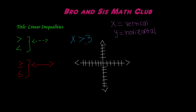So here, let's go ahead and graph this linear inequality, which is x is greater than 3. Remember this also: if you have x, then your line is going to be vertical, and if you have y, it's going to be horizontal. So in this case, it's saying the variable x is greater than 3. So here, this is where we have the x-axis and this is the y-axis. Since it says x is greater than 3, we have to plot 3 on the x-axis.